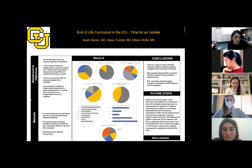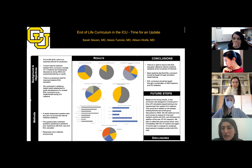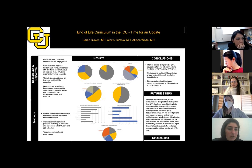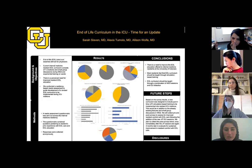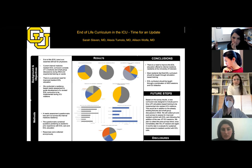I was also interested in figuring out exactly what components of end of life conversations people felt most daunted by. Our results show that the areas of most concern were navigating conflict between patients, family members, and the team; turning off implantable cardiac defibrillators; managing symptoms at end of life; pronouncing patient death; and offering autopsy and discussing organ donation. Surprisingly, most residents actually felt comfortable with having a conversation about changing code status when a patient's prognosis turned for the worse, and most felt comfortable with talking through the logistics of how a transition to comfort care works.